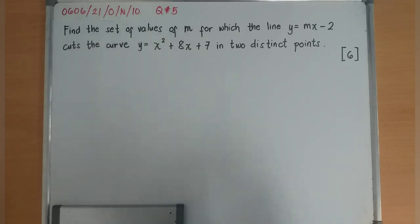So the question says, find the set of values of m for which the line y = mx - 2 cuts the curve y = x² + 8x + 7 in two distinct points.